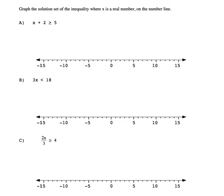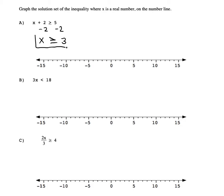In this first one we'll treat the greater than or less than sign as if it was an equals when we do the algebra. So if I subtract 2 from the left in order to get it away from the x, I just want to subtract 2 from the right as well — in that way it's very similar to solving equations. We bring our inequality sign down and do 5 minus 2, which is 3, and now we have a solution set which we can plot.